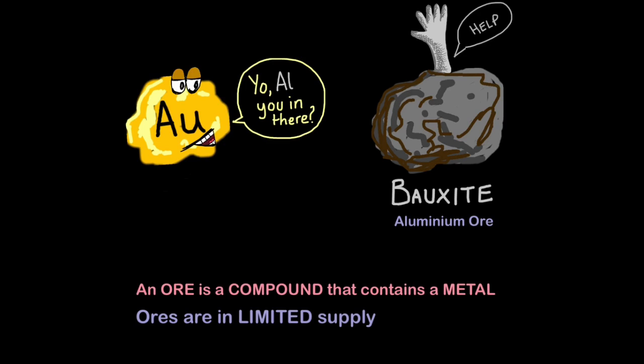But most metals are reactive and they readily react with oxygen to form metal oxides. A metal that is found naturally reacted to another element is called an ore. So the textbook definition of an ore is a compound that contains a metal, or enough of a metal, that makes it worth extracting.